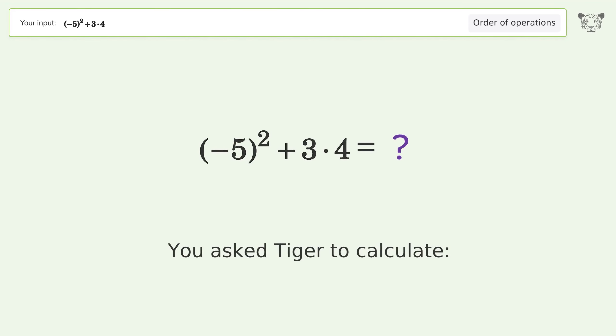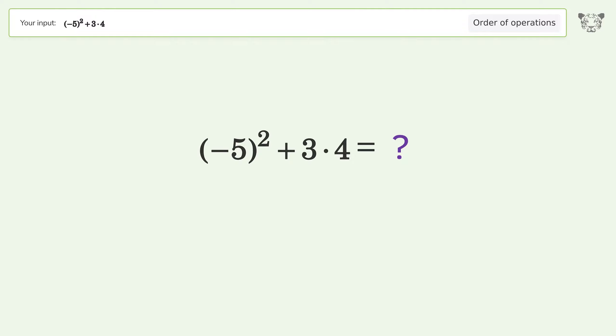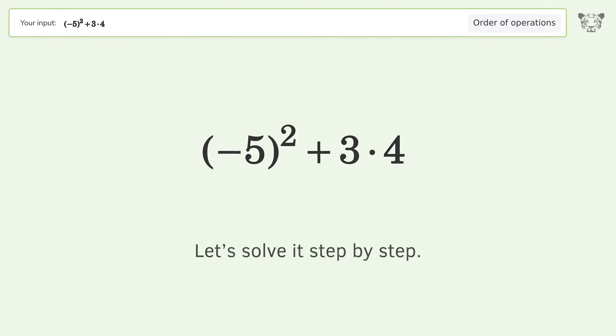You asked Tiger to calculate. This deals with the order of operations. The final result is 37. Let's solve it step by step.